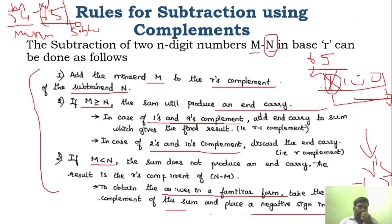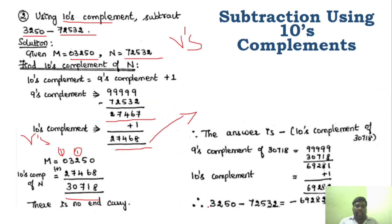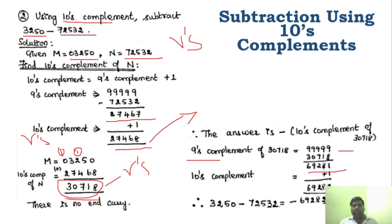Go back to the rules. Since there is no carry, what you have to do is find the R's complement of the sum. The R's complement here is the ten's complement. So for the sum obtained, first find the 9's complement, getting 69281, then add 1 to get 69282 — this is the ten's complement of the sum. But that is not the final answer; you have to place a negative sign in front of it.